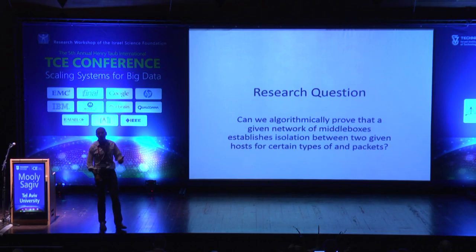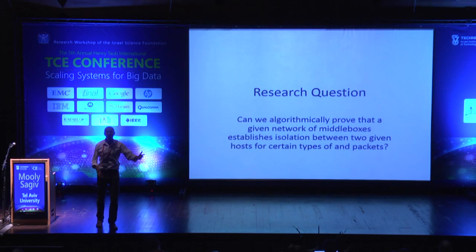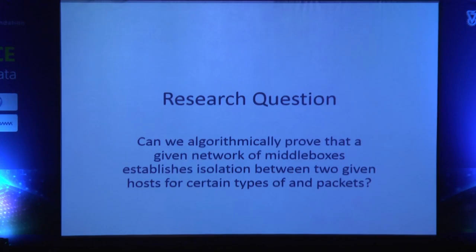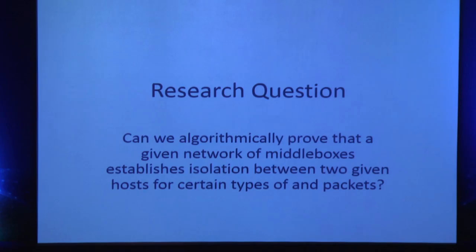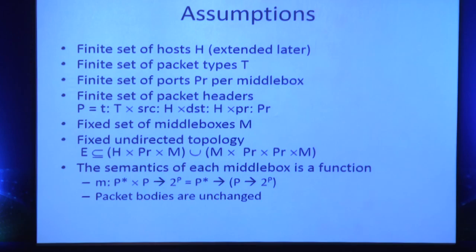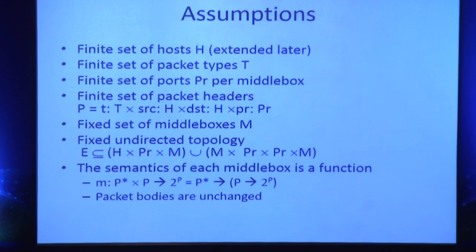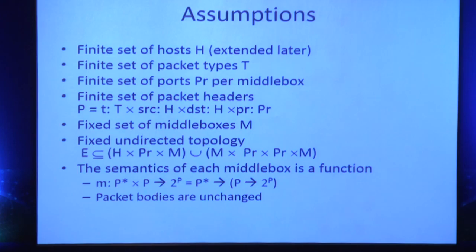What we are trying to do is develop a model checker or verifier: you input a description of the network and we tell you if it has isolation, either finding a bug or proving no bug exists — that A is truly isolated from B, for example that an SSH packet from A will never reach B. Our assumptions are a finite set of hosts, a finite set of packet types like SSH and Skype, and ports connected to middle boxes. The header consists of the source, type, destination, and incoming/outgoing port.